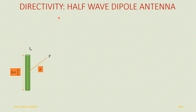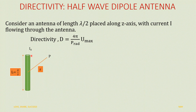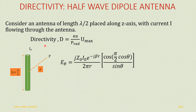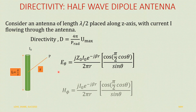Consider an antenna of length lambda by 2 placed along the z-axis and the current I flowing through the antenna. The peak current is represented by I0. Directivity D is equal to 4 pi by P_rad into U_max, where P_rad represents the total power radiated and U_max represents the maximum radiation intensity. The electric field component in the far field is E_theta, equal to j*Z0*I0*e^(-j*beta*r) by 2*pi*r, multiplied by cos(pi/2 * cos(theta)) by sin(theta). Here beta represents the phase constant and Z0 is the intrinsic impedance in free space.